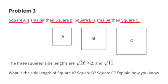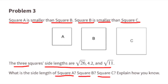Problem number three: Square A is smaller than Square B, and Square B is smaller than Square C. The three square side lengths are the square root of 26, 4.2, and the square root of 11. What is the side length of Square A, Square B, and Square C? Explain how you know.